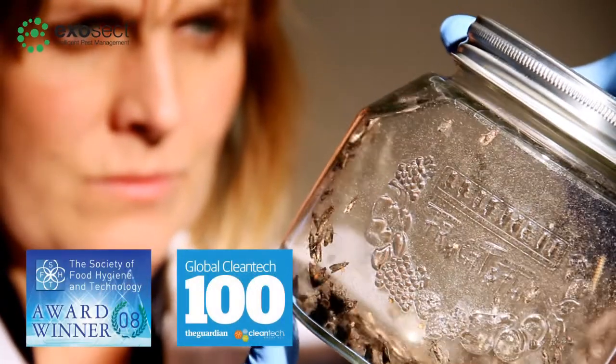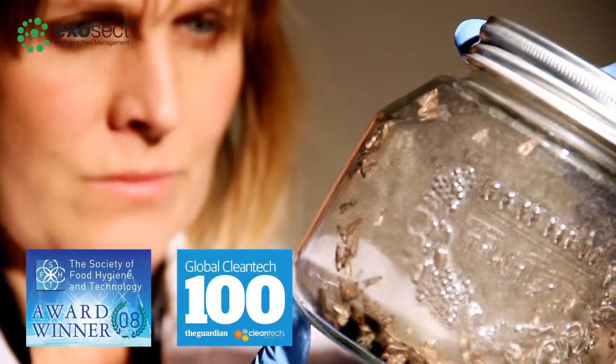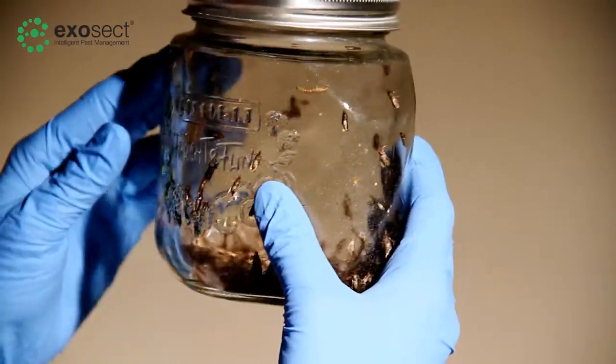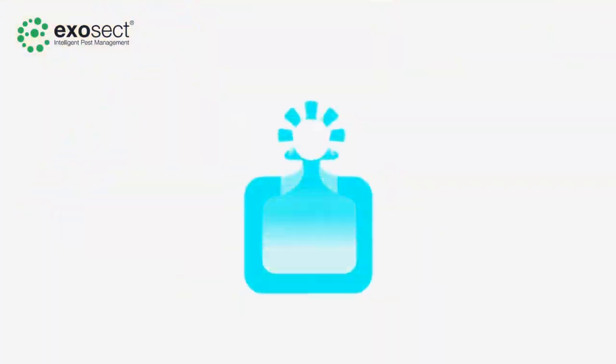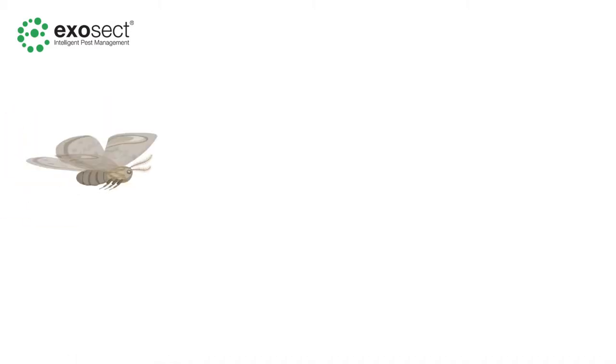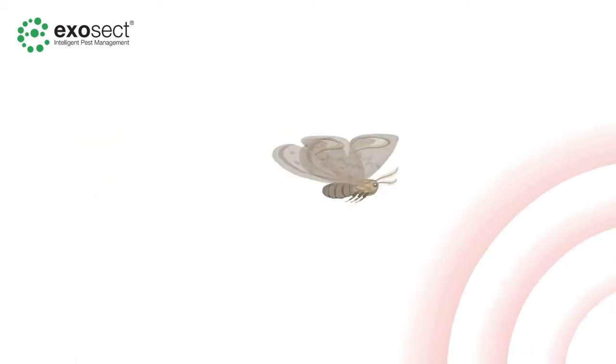Exosec's SPTAB is an auto-confusion system that controls moth populations by using the male moth to break the breeding cycle. Male moths are attracted to the Exosec SPTAB, which contains entostat powder formulated with synthetic female pheromone, which it releases slowly into the air.